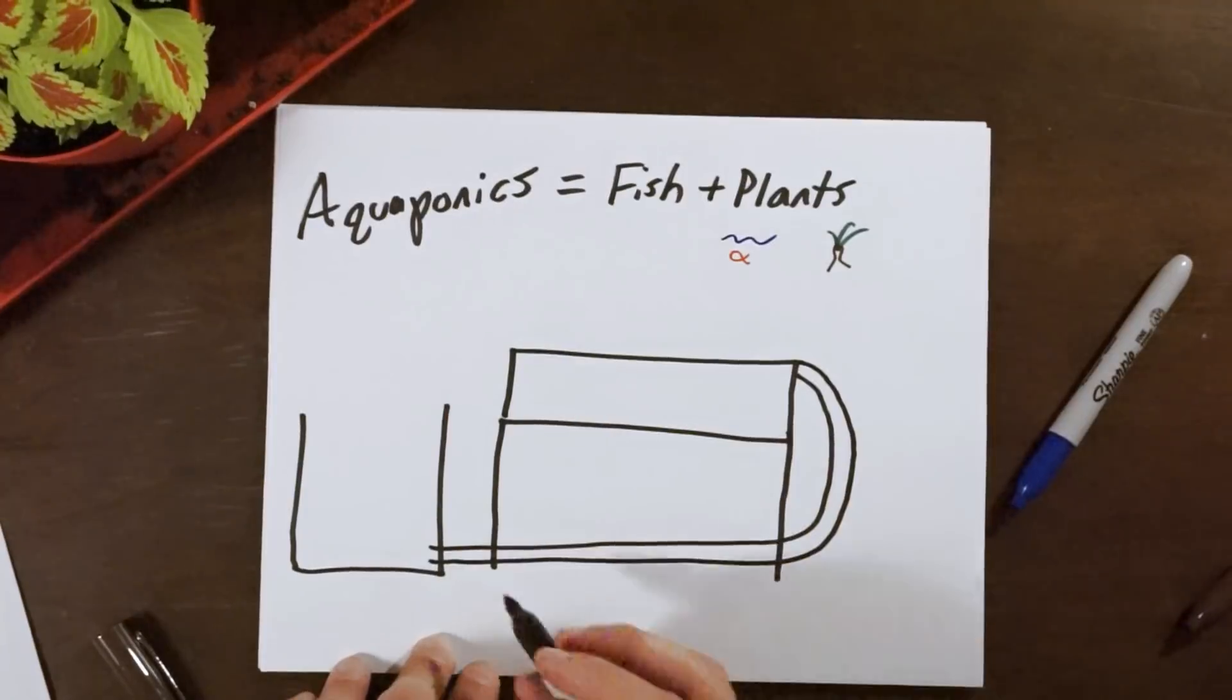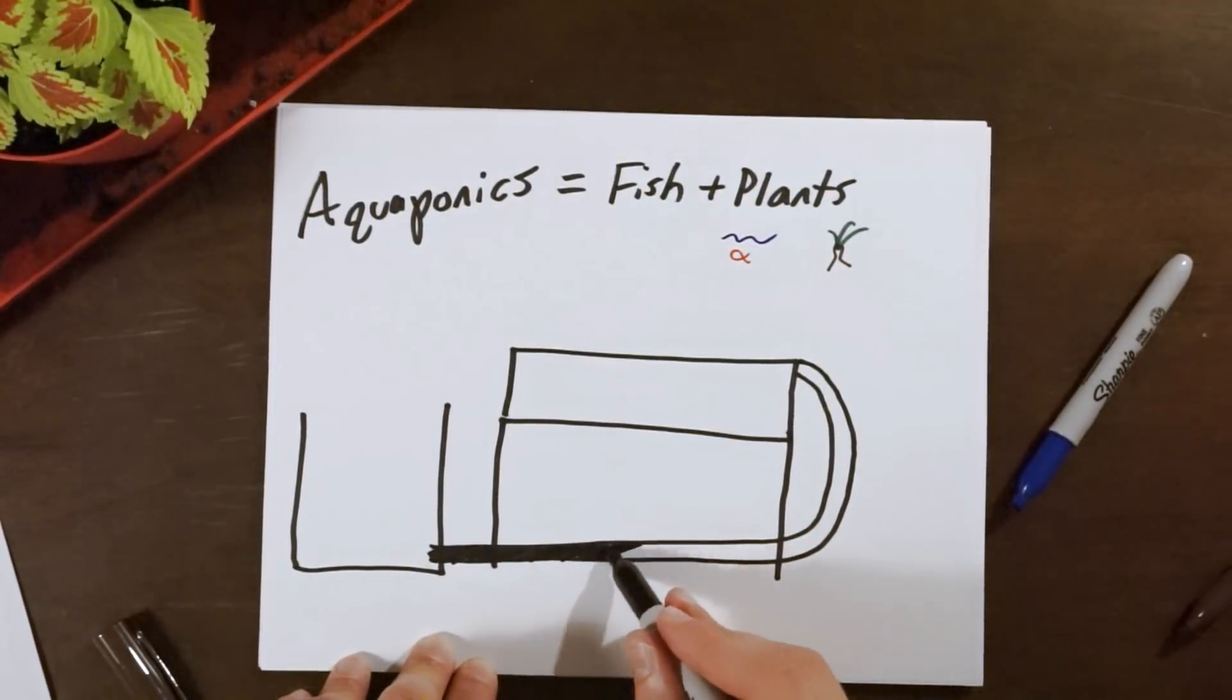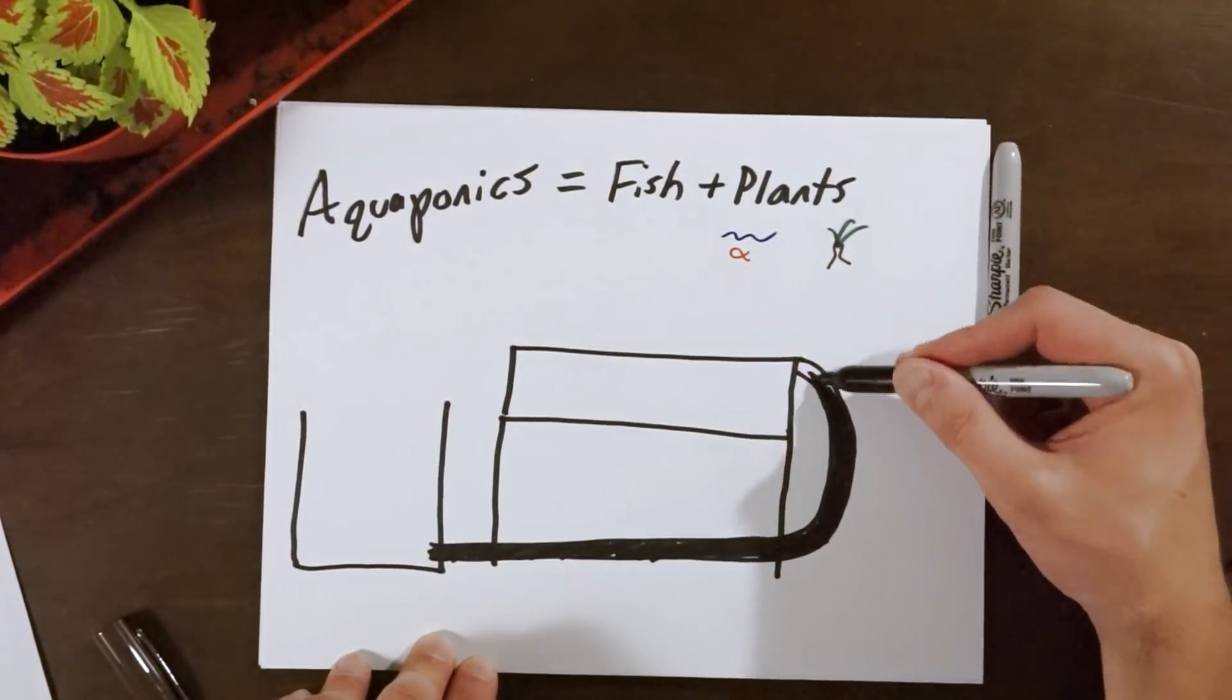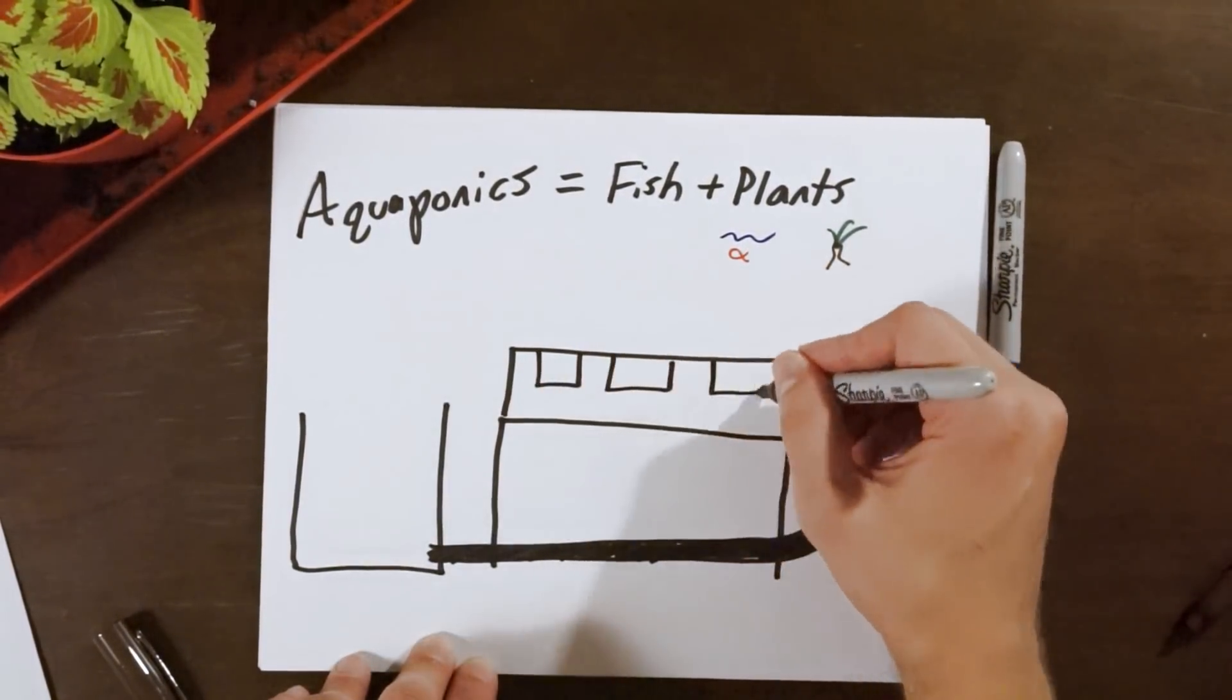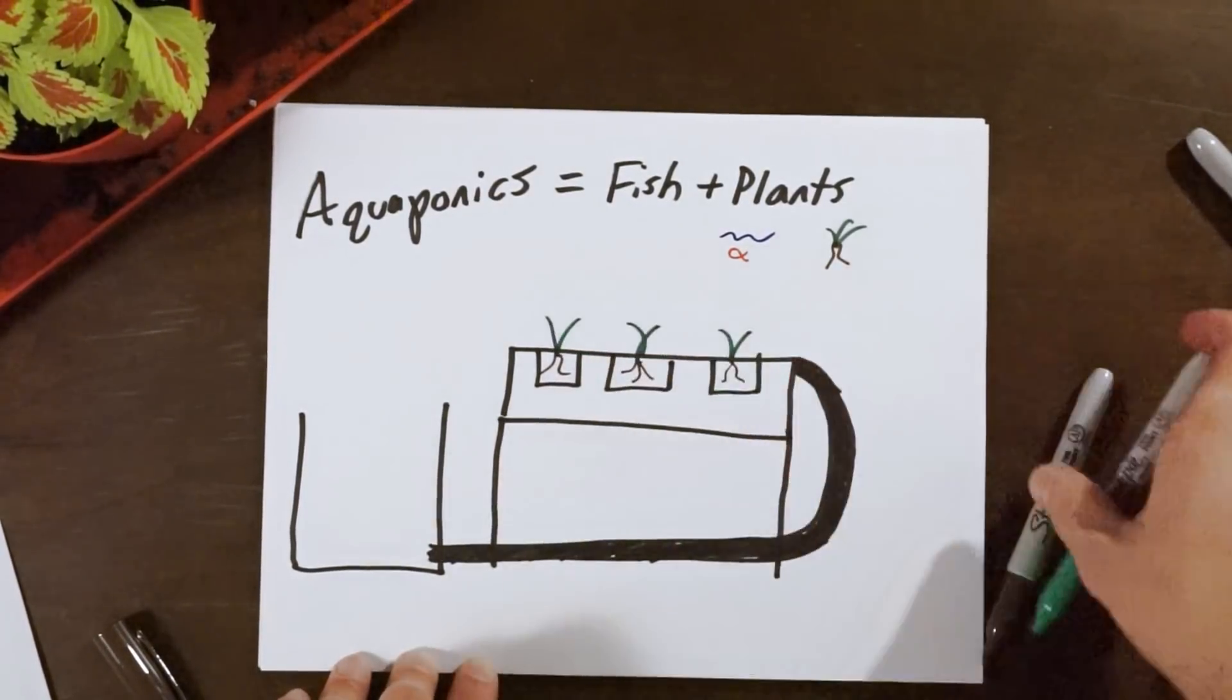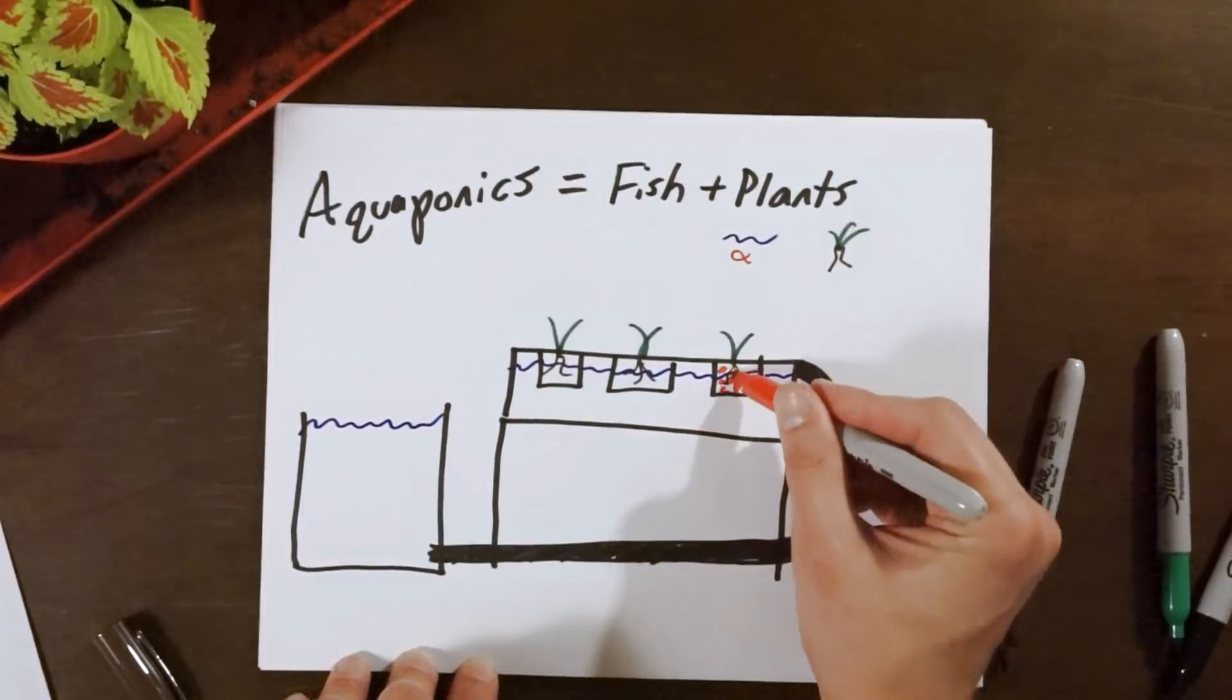The plants are grown in much the same manner as with a hydroponic system. The plants receive their nutrients from the water from the fish tank that is full of waste, and that acts as a natural fertilizer for the plants.